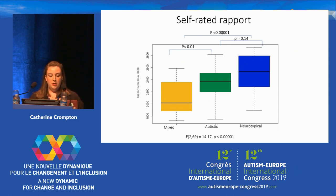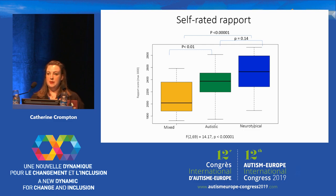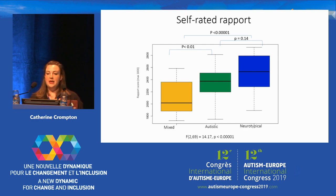Here are the results from Study 1. The graph shows self-rated rapport measures for the mixed pairs in yellow, the autistic pairs in green, and the neurotypical pairs in blue. When neurotypical people are with other neurotypical people, they have high rapport — that's the blue box on the right. When autistic people are with other autistic people, they also have high rapport — the green box. Autistic people's experience of rapport with other autistic people isn't significantly different to how neurotypical people experience rapport with other neurotypical people. In contrast, the yellow box shows the rapport for the mixed pairs, and their rapport is significantly lower. So pairs of autistic people and pairs of neurotypical people don't significantly differ in rapport when with someone of the same neurotype, but mixed pairs experience much lower interactional rapport.